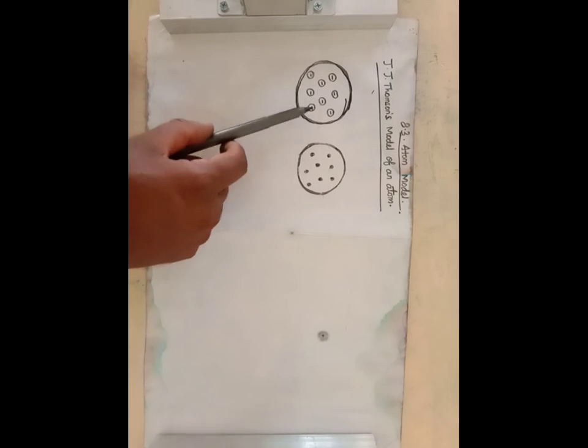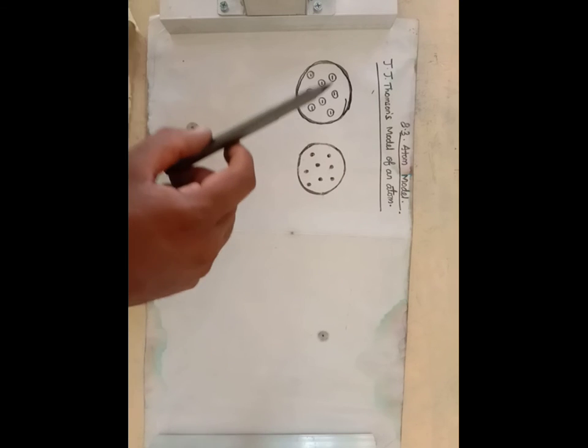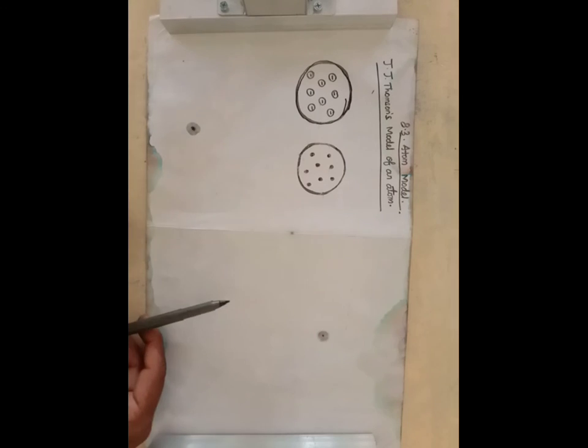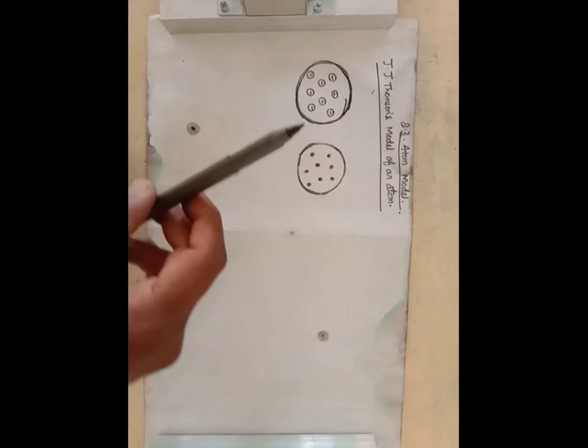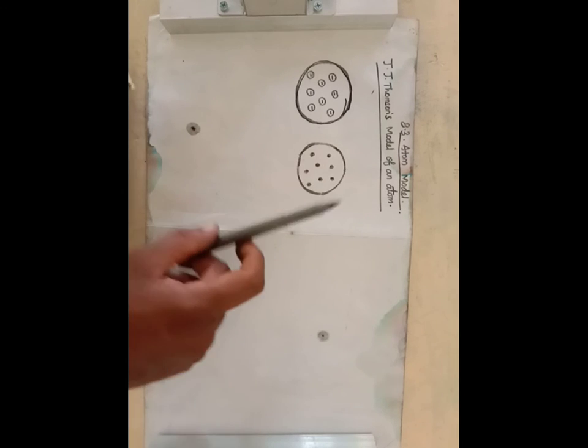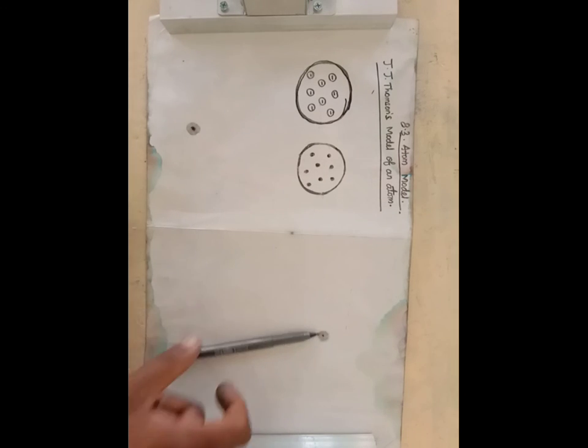Further, this atom model failed to explain the origin of the spectral lines observed in the spectrum of hydrogen atom. So, the J.J. Thomson's model of an atom failed to explain the stability of an atom.